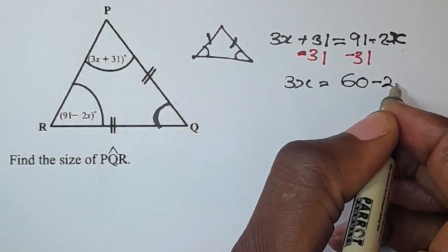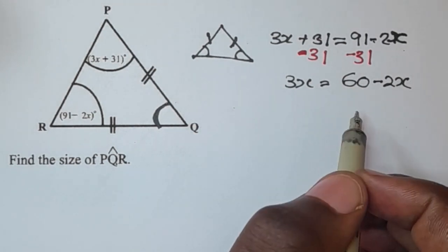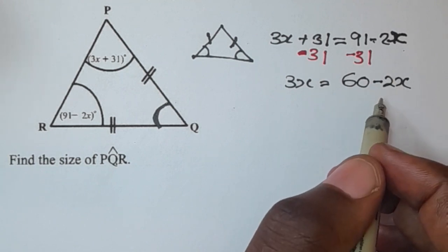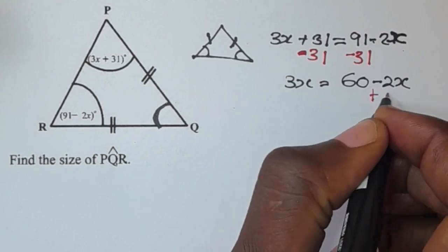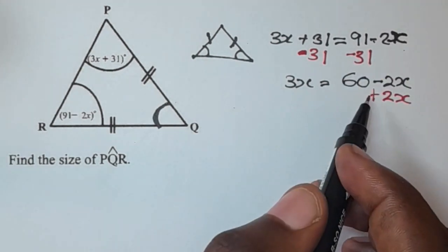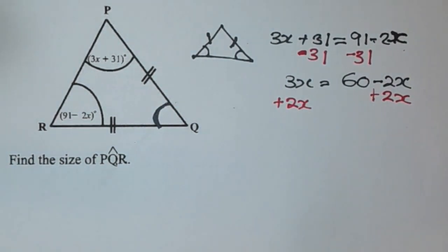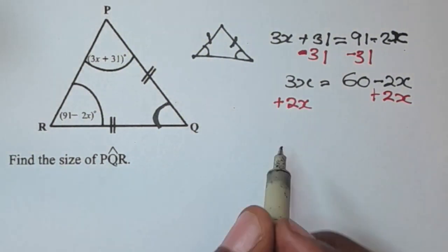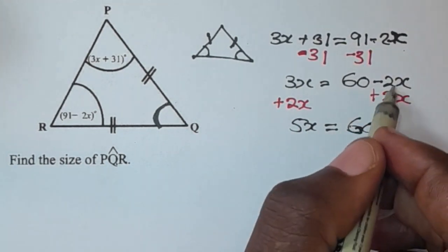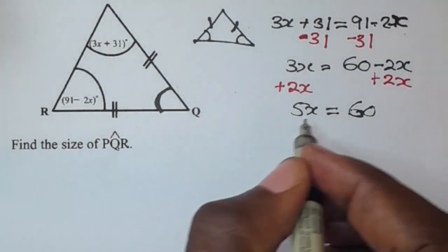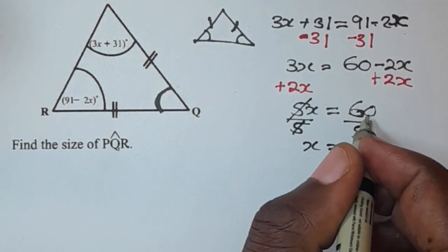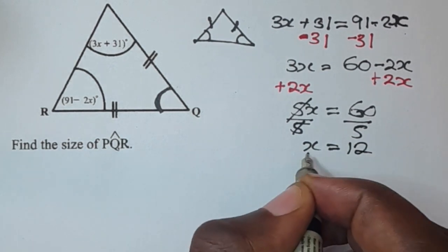At this point we collect like terms — the negative 2x on the right must be removed, so we add 2x to both sides. Negative 2x plus 2x is zero. So 3x plus 2x gives 5x, equal to 60. Dividing both sides by 5, x equals 60 divided by 5, which is 12.